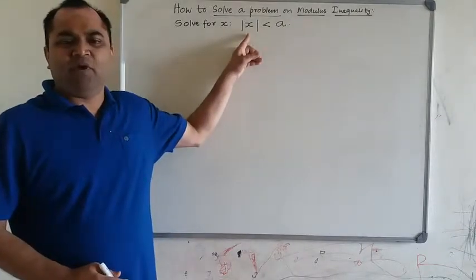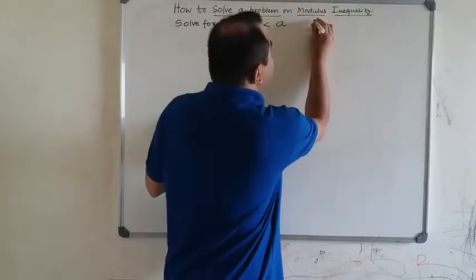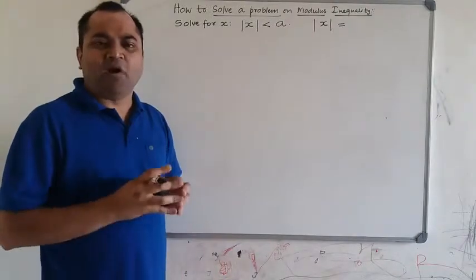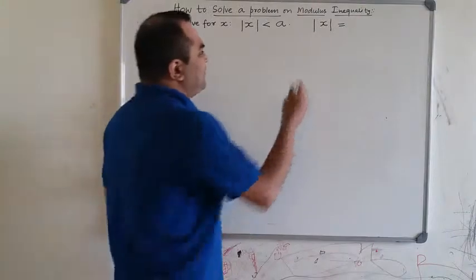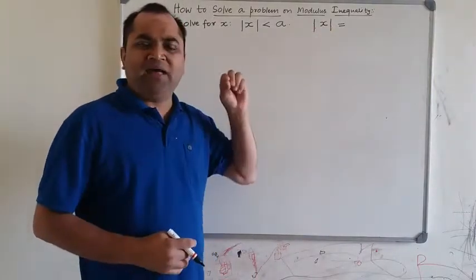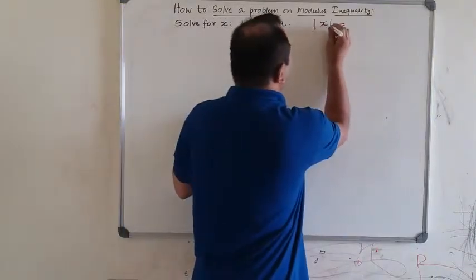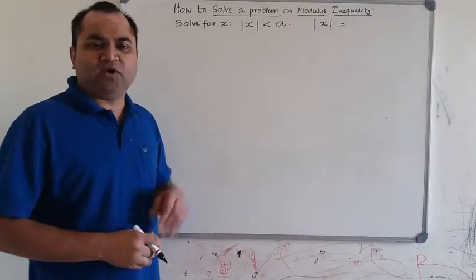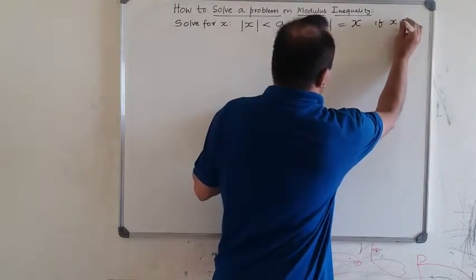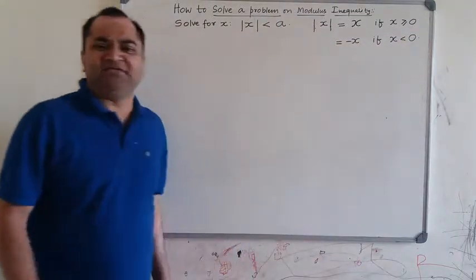First, recall the definition of modulus — also called absolute value in some areas. Modulus of a number X is the same as absolute value of a number. Mod X equals X if the number X is greater than or equal to 0, and mod X equals minus X if the number X is less than 0.